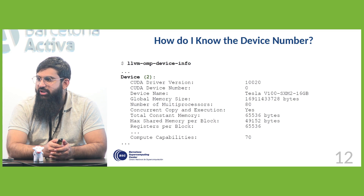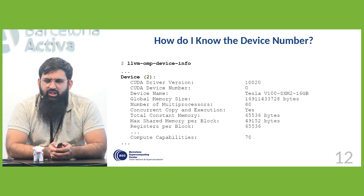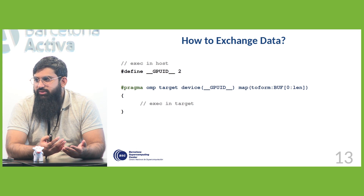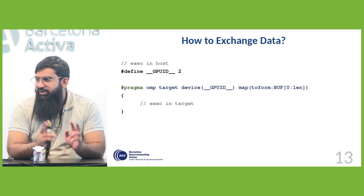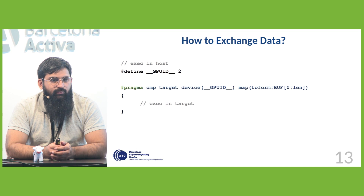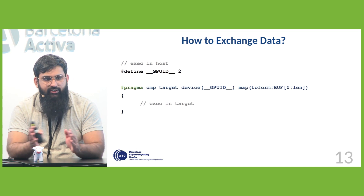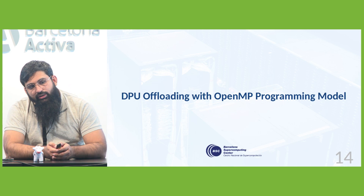How do you know the device number? The compiler gives you a utility to get the device number. In the case of Clang/LLVM, this is llvm-omp-device-info, and the device we can see is a Volta GPU in a Power9 cluster at BSC. You exchange data using the map clause — either to, from, or both — specifying the pointer, starting index (zero), and the length of the array.